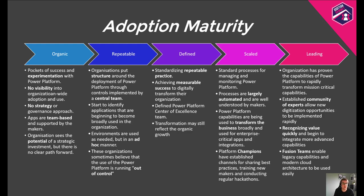In the organic phase, the organisation has pockets of success or experimentation with the Power Platform. There's not really any visibility in organisation-wide adoption and use — sometimes the adoption is viral, based on top of Excel and SharePoint as data sources, with makers discovering Power Apps and Power Automate through the Office 365 portal. But there's not really any overall strategy or governance approach. Apps are largely team-based, supported by the makers, and the organisation might see the potential of strategic investments but there's not a clear path forward.